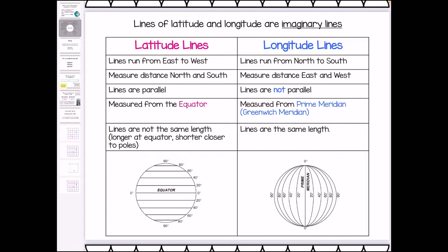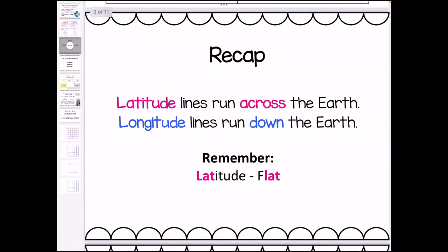Longitude lines run from north to south and they measure distance east and west of the prime meridian, or the Greenwich meridian. They are not parallel to each other — the lines are the same length, but they all run from north to south. It's important to know the difference between latitude and longitude when doing position coordinates because latitude always comes first. Longitude lines are the ones that run down. The way I remember it is saying 'lat and flat' — latitude lines are the flat lines that run across the earth.